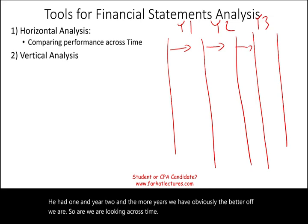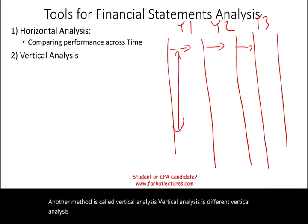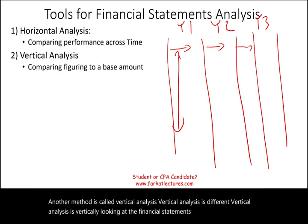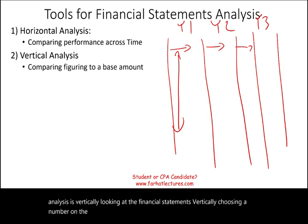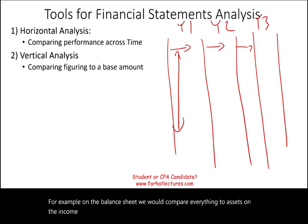Another method is called vertical analysis. Vertical analysis is different — you're looking at the financial statements vertically, choosing a number on the financial statement and comparing everything to that number. For example, on the balance sheet we would compare everything to total assets. On the income statement, we'll compare everything to revenues. Again, we're going to be working through these examples.